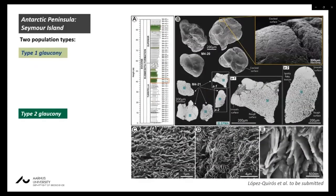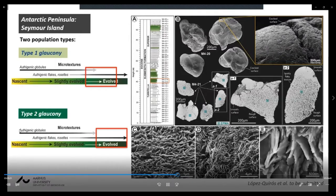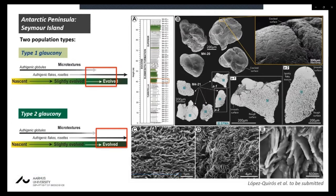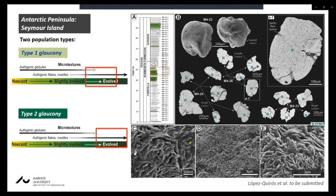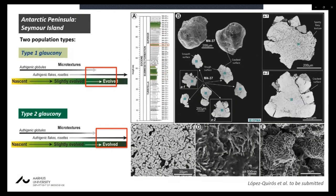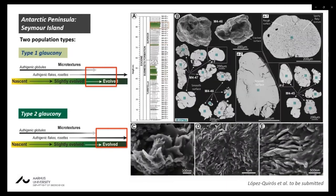In the Submeseta Formation of Seymour Island, the same population Types 1 and 2 of glaucony grains were also observed with similar nanostructures. From a microtextural point of view, both Types 1 and 2 show an evolved shape, as in ODP 696. Both types were documented throughout the Submeseta Formation sequence in each glauconitic horizon.